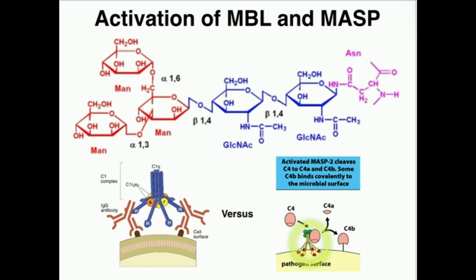Mannose binding lectin is associated with another protein called MASP — mannose binding lectin associated serine protease. So the MASP is a serine protease. This protein, MBL and MASP together, looks very similar to C1 from the classical pathway. C1 has a Q component and then the R and S components, which are the serine proteases. Similarly, MBL is what binds the sugars, and the MASPs are the serine proteases. It's going to function in an identical way to C1.